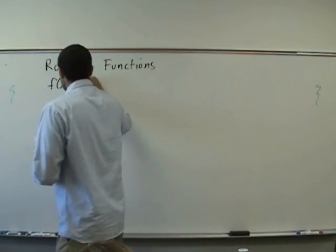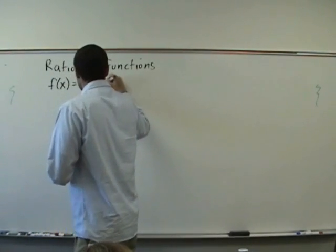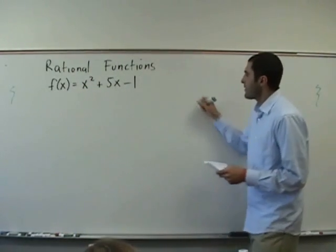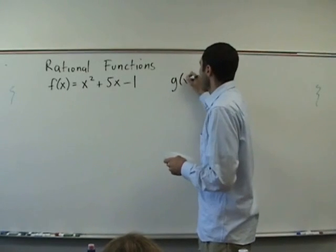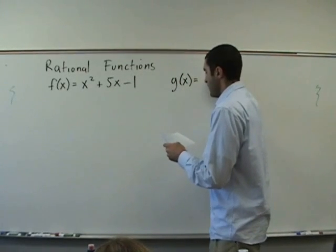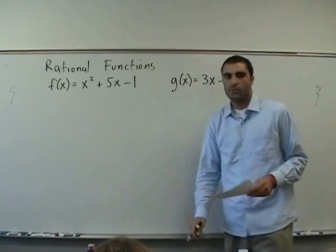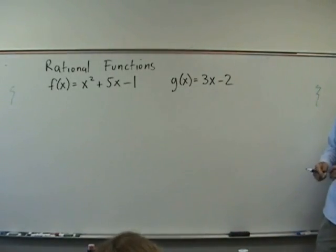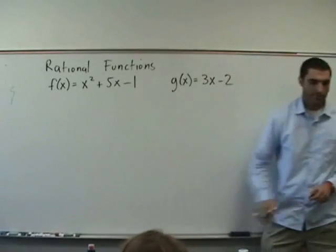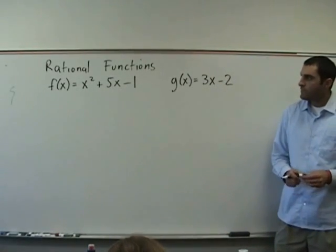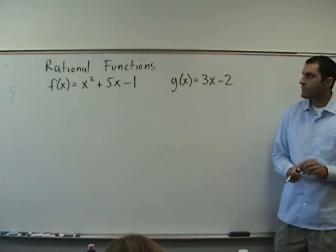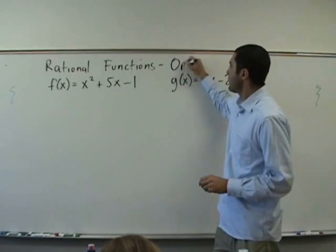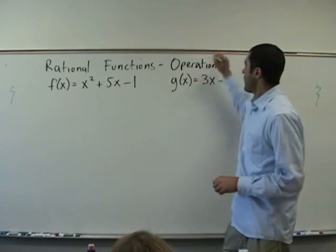f of x equals x squared plus 5x minus 1. g of x equals 3x minus 2. Can we write them side by side? Yeah, it's good to write them side by side because we're going to be working.